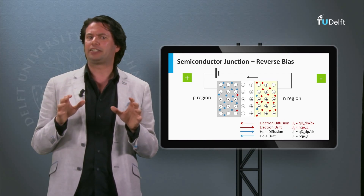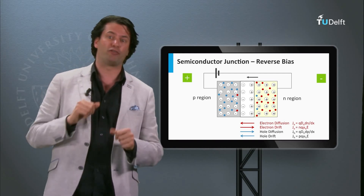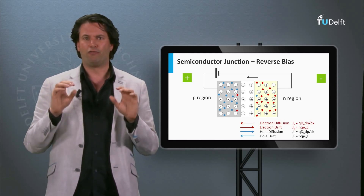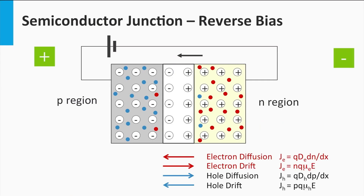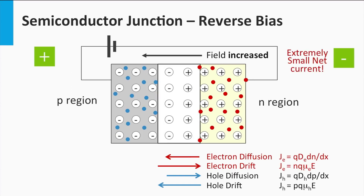We can do the opposite of forward biasing as well — we can apply a reverse bias over the p-n junction, which is still in the dark. The voltage at the contact of the p-doped side is negative and the voltage at the contact of the n-doped side is positive. The built-in electric field and the applied electric field across the depletion zone are now pointing in the same direction, so the total electric field of the depletion zone is increased. As a result, the width of the depletion zone gets much wider, or in other words dx is getting larger.